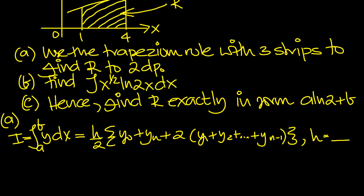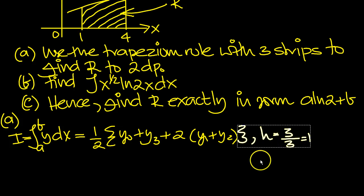So 4 minus 1 is 3, and the number of strips is 3. So h is 3 over 3, which is 1. Now we've got number of strips is 3, so let's put 3 in here. And 3 minus 1 is 2, and there's 2 already listed. So there's our formula then for this particular case.